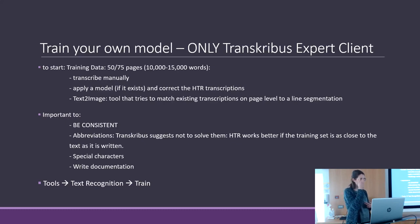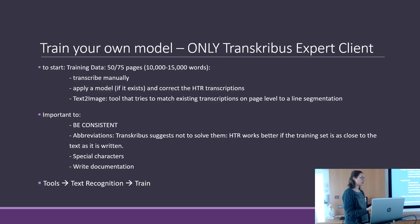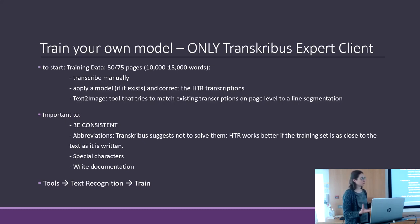For example, in my corpus I have three hands. I selected pages randomly to create my training data. If I had picked only pages from the first volume, I would have a model for only one hand, not the other two that appear in the other volumes.